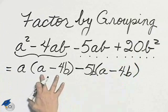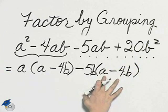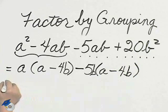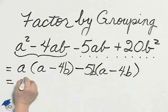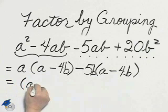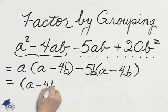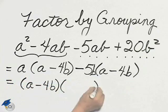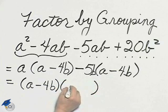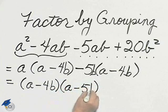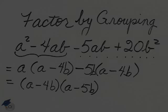I got it. A minus 4b, exactly a minus 4b. That's our common factor, a minus 4b, leaving behind a minus 5b. Once again, you could check that with foil.